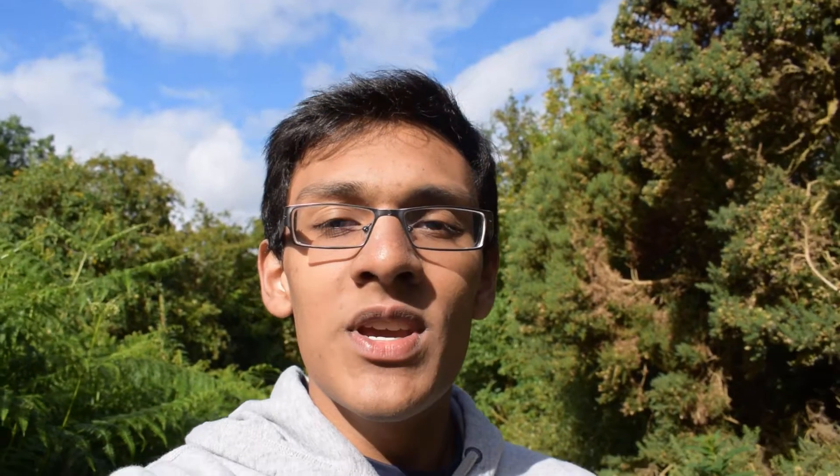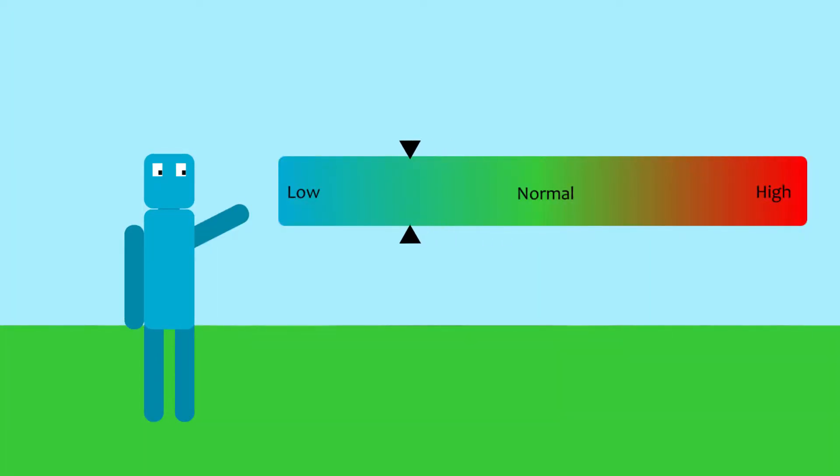However, sometimes there's a mix-up of signals between the vagus nerve and the brain, and the response goes too far. Blood vessel dilation occurs and blood pools inside the legs, meaning that the blood pressure drops and less blood gets to the brain.